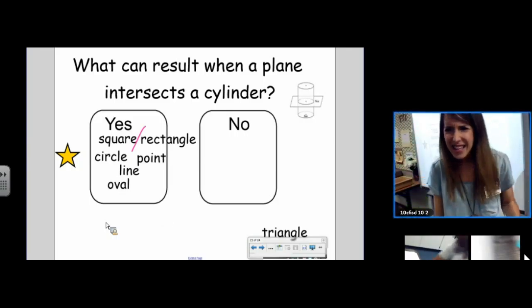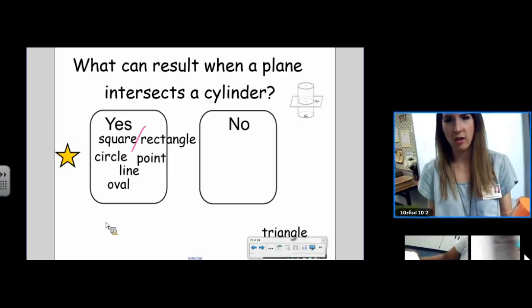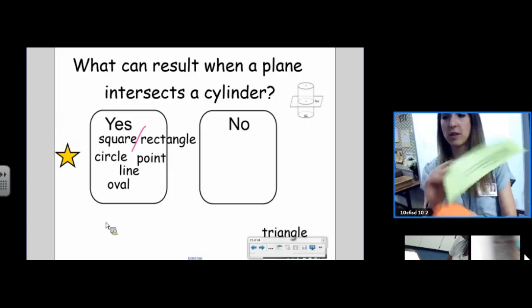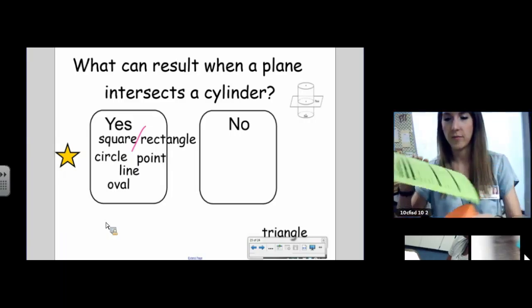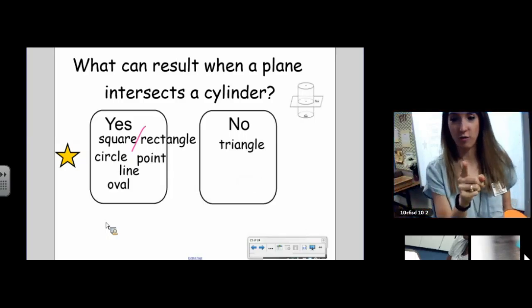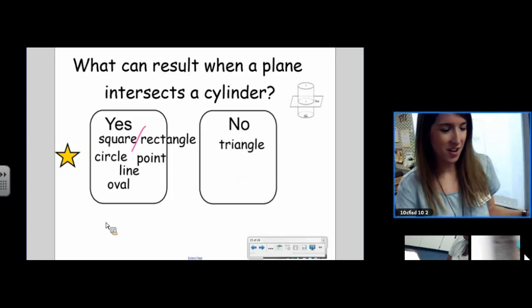So is there anything in the no column? Could you get a triangle? Could you get a triangle out of a plane and a cylinder? Or you can try tonight on that website? The answer is no. All right. You can start on your work.